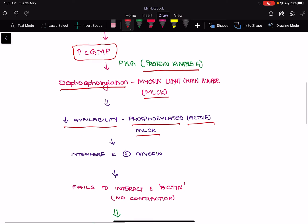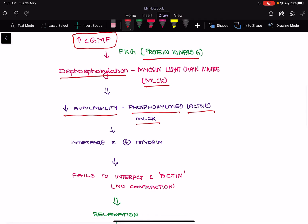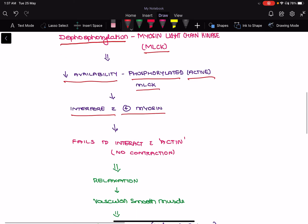Once there is a decrease in the availability of phosphorylated myosin light chain kinase, it interferes with the activation of the myosin. Following that, myosin fails to interact with the actin, so there won't be any contraction.